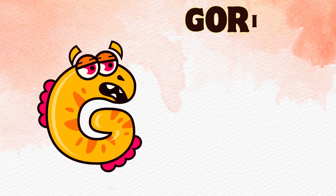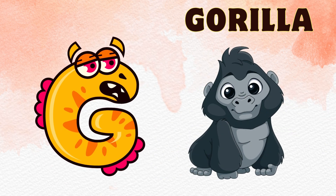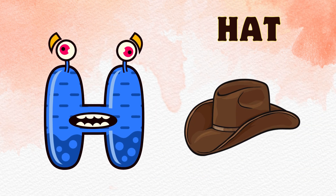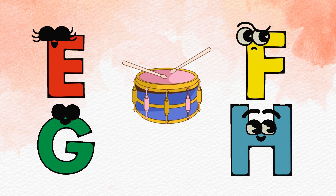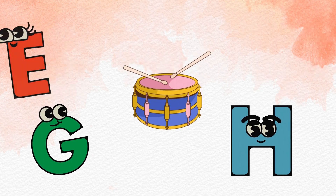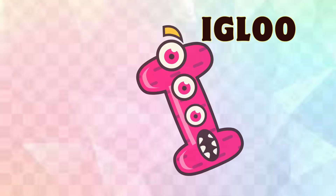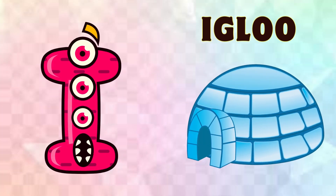G is for Gorilla, G-G-G-Gorilla. H is for Hats, H-H-Hats. I is for Igloo.